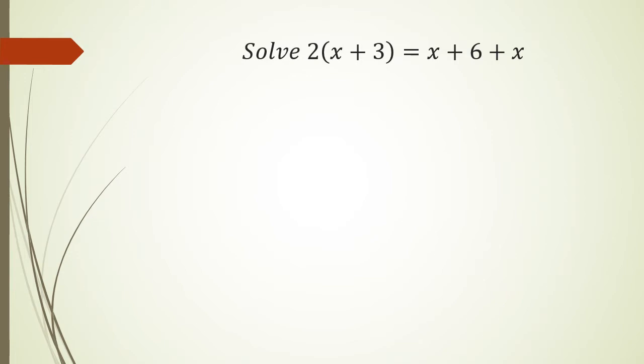So as usual the first thing I'm going to do is expand the brackets. So 2 times x I have 2x and then 2 times 3 I have plus 6 and this is equal to x plus 6 plus x. Simplifying this I'm going to get 2x plus 6 equals 2x plus 6.